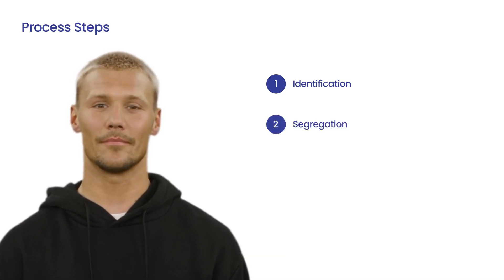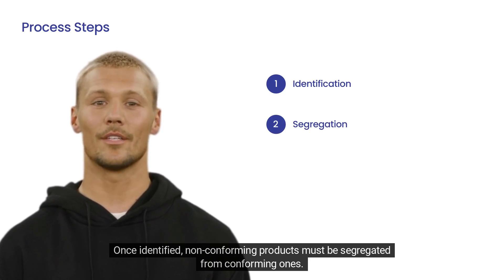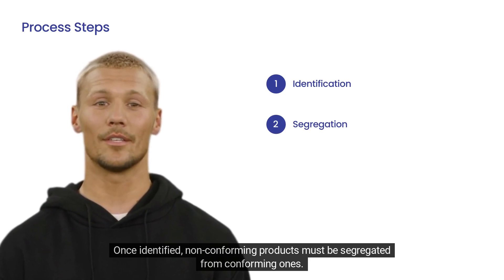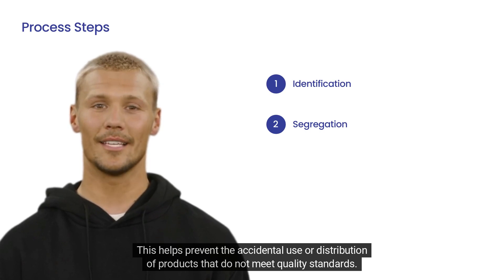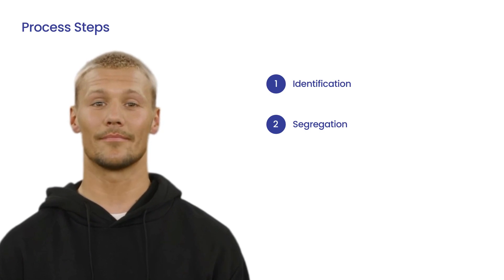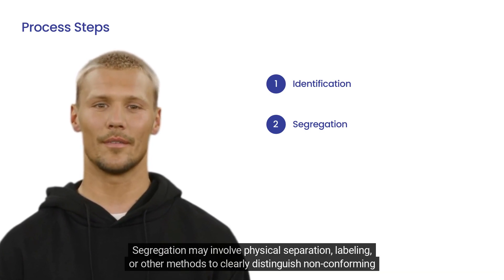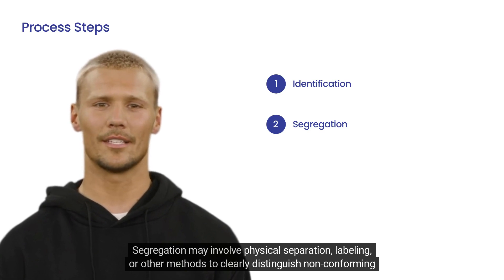2. Segregation. Once identified, non-conforming products must be segregated from conforming ones. This helps prevent the accidental use or distribution of products that do not meet quality standards. Segregation may involve physical separation, labeling, or other methods to clearly distinguish non-conforming products.